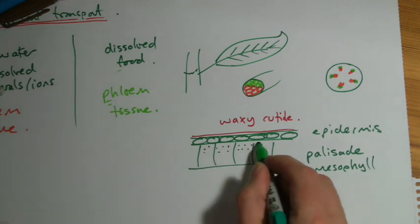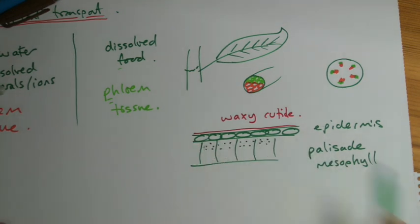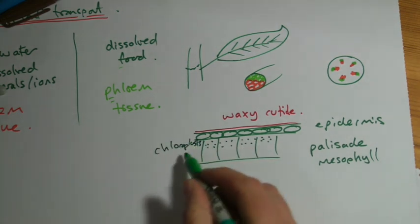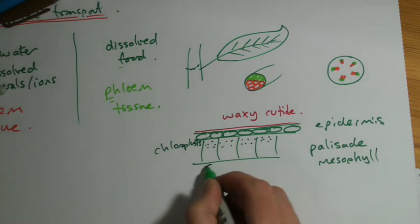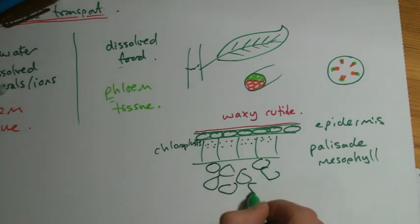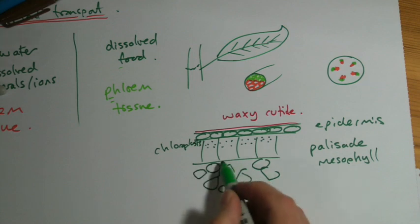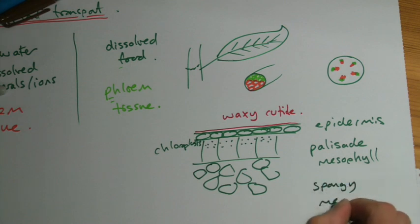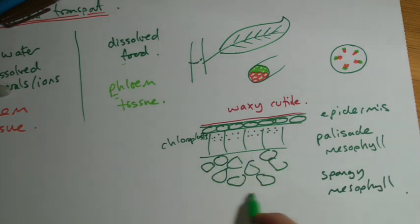They've got lots of chloroplasts in, that's the key to it. That's where they're going to be absorbing the light, mostly they're at the top. You then have this layer of cells that are loosely bundled, so there's lots of spaces in between, that's called spongy mesophyll. There's lots of air gaps in there where oxygen and carbon dioxide can get in and out and diffuse through.